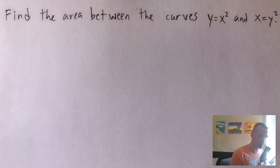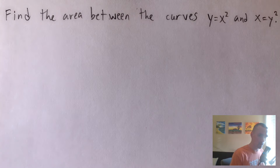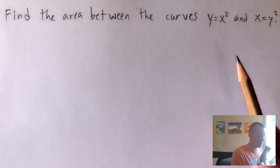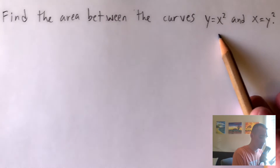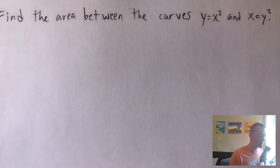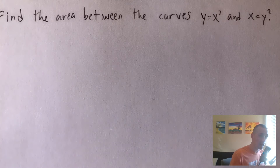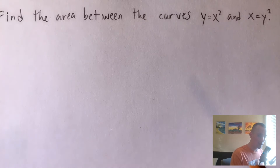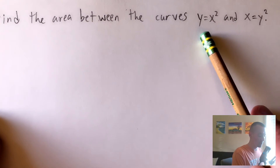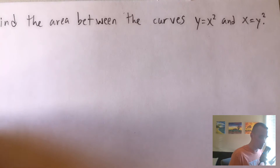The first step to find the area between two curves is figuring out where those two curves intersect with each other. Usually we set the functions equal to each other, but here it's a little weird because we have y equals some function of x and x equals some function of y. In order to set them equal, we need to get them both in the form y equals some function of x.